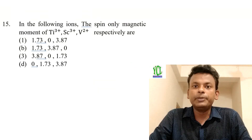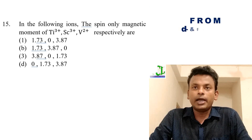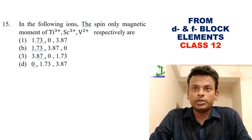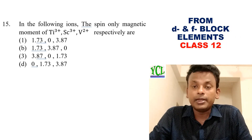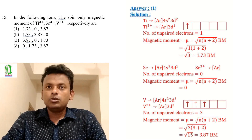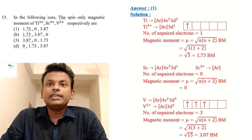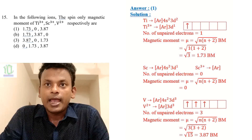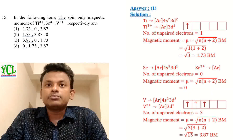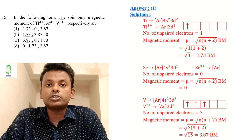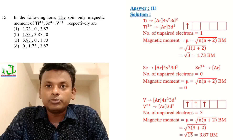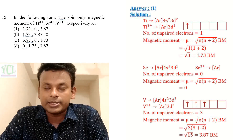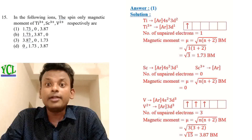Question 15: Spin-only magnetic moments of Ti³⁺, Sc³⁺, and V²⁺ respectively. The answer is option 1. Ti³⁺ has one unpaired electron so magnetic moment is 1.73 BM. Sc³⁺ has zero unpaired electrons so magnetic moment is 0. V²⁺ has three unpaired electrons so magnetic moment is 3.87 BM. So option 1 is correct.